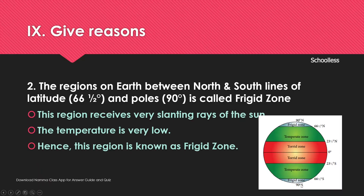The temperature is very low in the frigid zone. The region receives very slanting rays of the sun, hence the very cold temperatures.